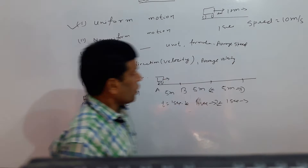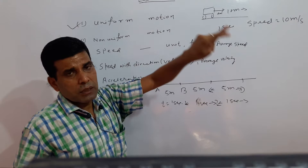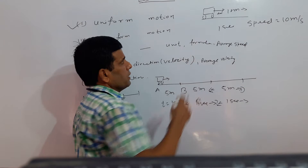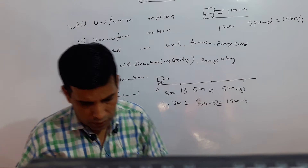So what is the speed for this bus? The speed of this bus is 10 meters per second. The unit of speed is meters per second, or kilometers per hour, or centimeters per second. These are the units of speed. So what is the basic formula of speed? In every unit time, what is the distance covered — that gives the speed.